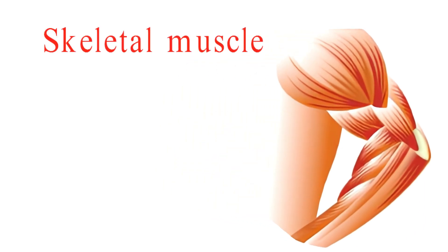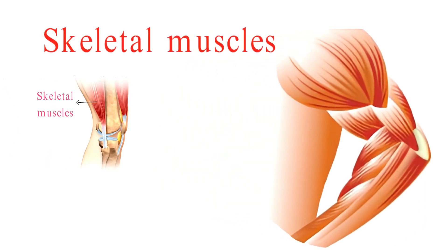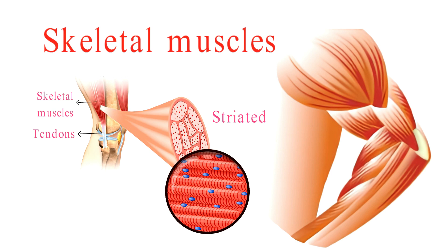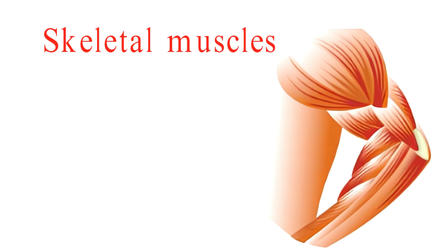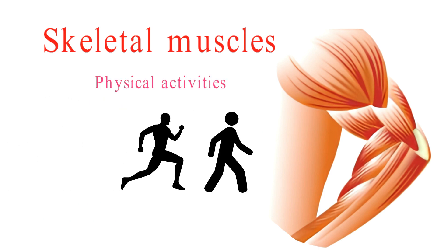Let's start with skeletal muscle tissue. It's attached to our bones by tendons throughout our body. Under a microscope, it appears striated, giving it a striped or banded look. Importantly, skeletal muscles are under voluntary control, meaning we can consciously decide when and how to move them. Skeletal muscles are responsible for all those physical activities we love, like walking, running, and lifting.